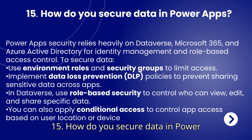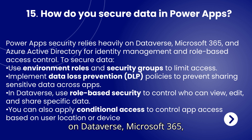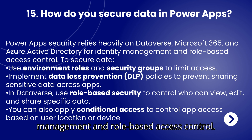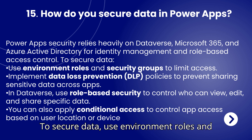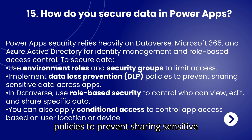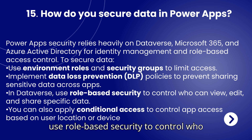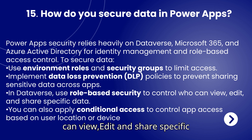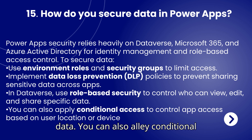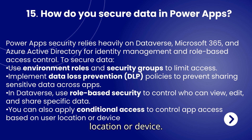Question 15: How do you secure data in Power Apps? Power Apps security relies heavily on Dataverse, Microsoft 365, and Azure Active Directory for identity management and role-based access control. To secure data, use environment roles and security groups to limit access. Implement data loss prevention (DLP) policies to prevent sharing sensitive data across apps. In Dataverse, use role-based security to control who can view, edit, and share specific data. You can also apply conditional access to control app access based on user location or device.